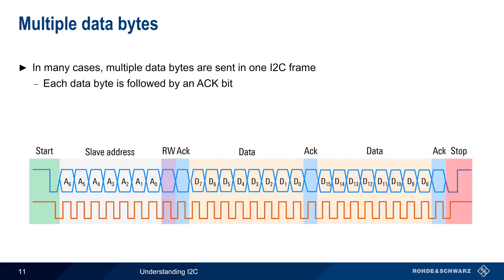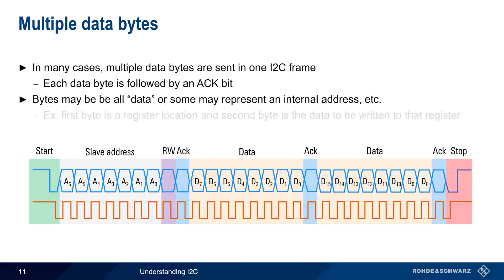I2C doesn't specify the contents or the purpose of data bytes. These bytes may be all data, but often one of them will indicate an internal address or register location in the slave device. For example, if the master wants to write a certain value to a specific register within the slave, the first data byte might be the address or location of that register, and the second byte would be the actual data that's to be written to that location.